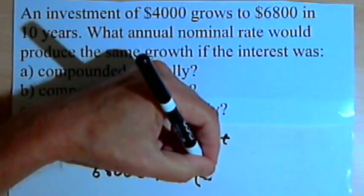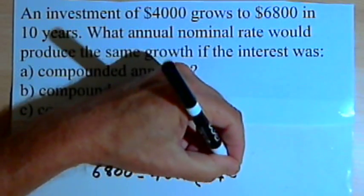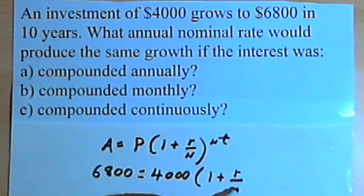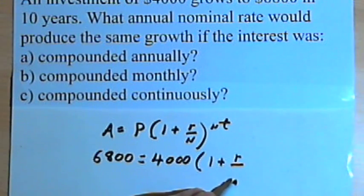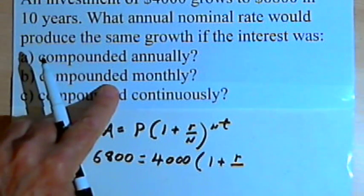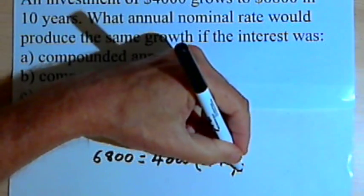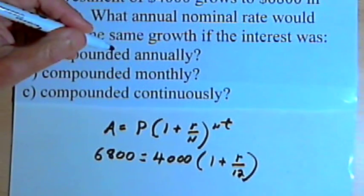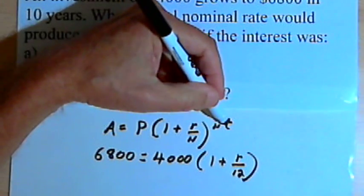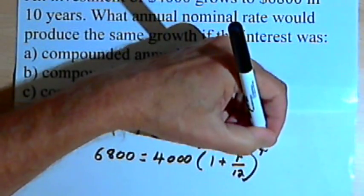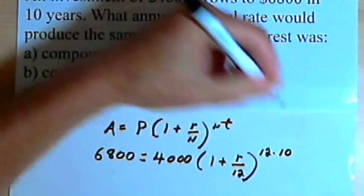We're multiplying that times 1 plus r. We don't know what r is, but n, the number of compounding periods a year, would be 12 because we're compounding it monthly. And then we raise that to the nt power. n is 12 and t is the number of years, that's 10.